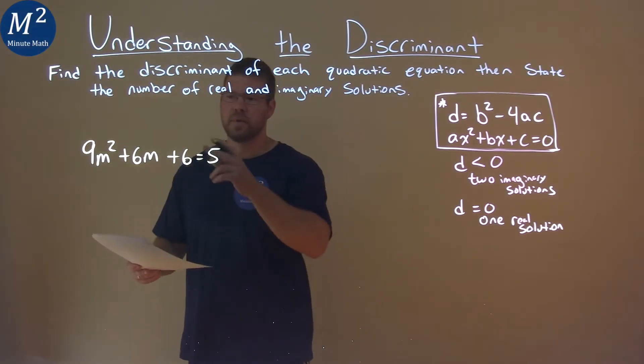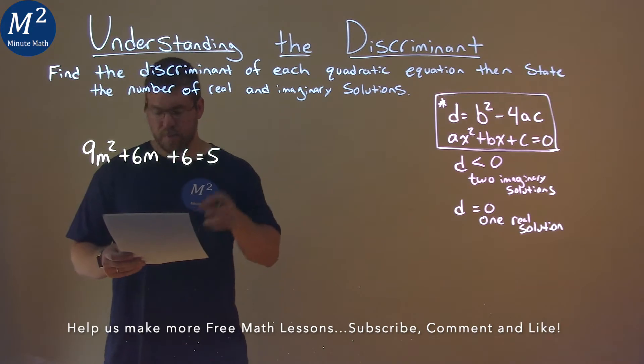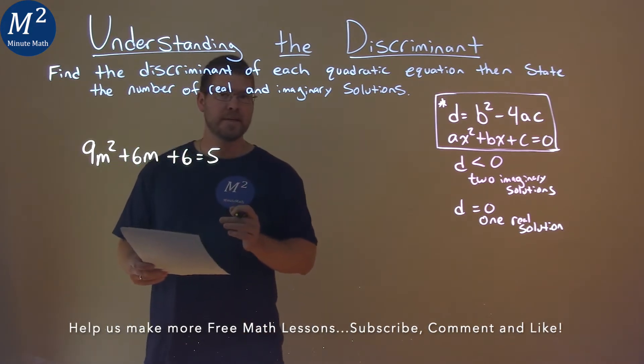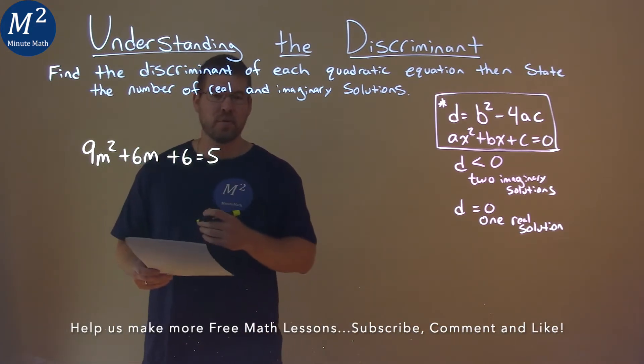We're given this problem right here: 9m squared plus 6m plus 6 equals 5, and we need to find the discriminant.